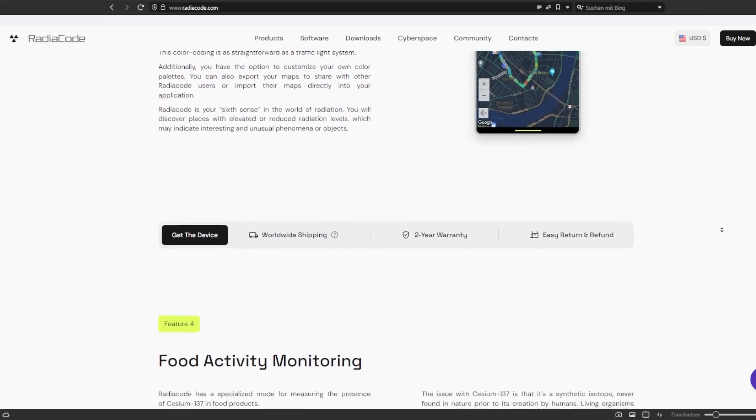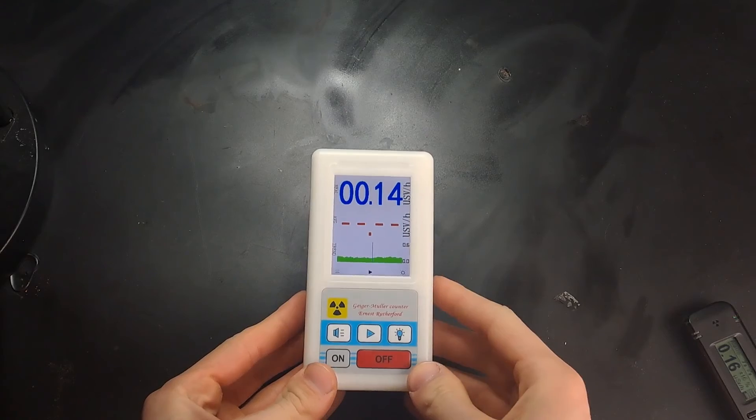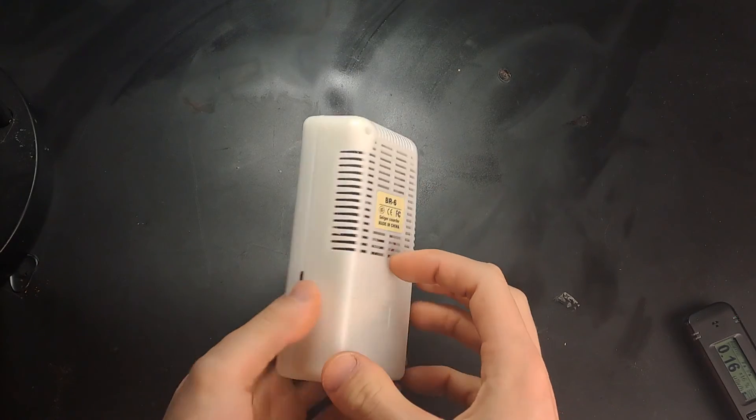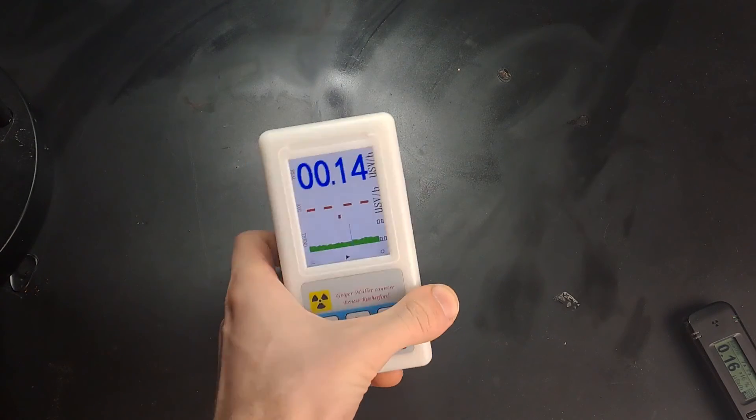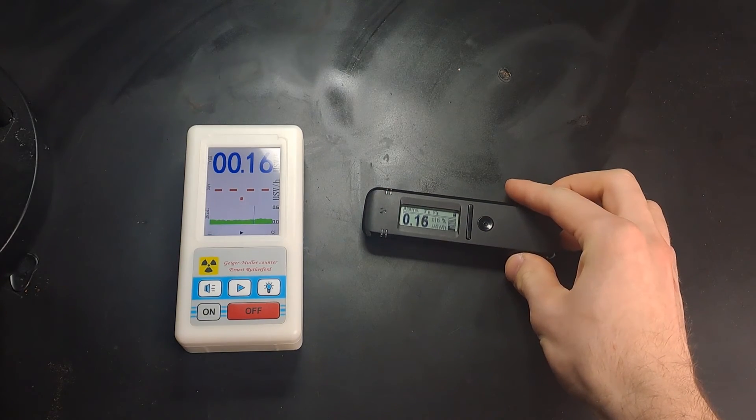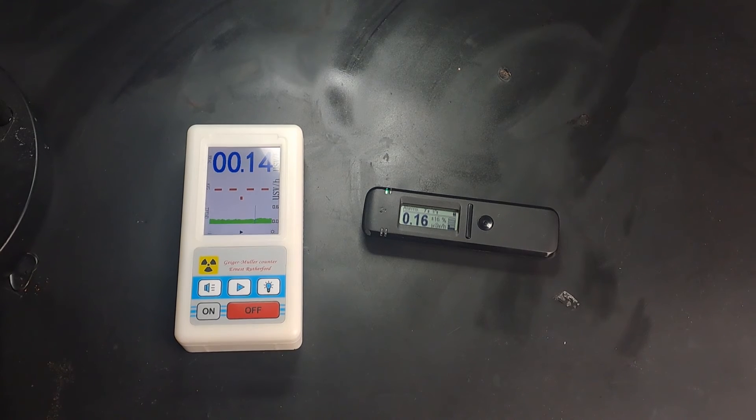This device costs a lot of money, of course, but it's well worth it in my opinion. But if you don't want to wait and save all that money, you can go ahead and buy a 100 euro cheap Chinese Geiger Müller tube. But if you want to invest a lot of money in a high-end measuring device, then I would say go for the Radiacode.